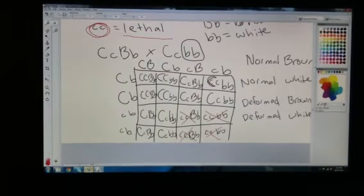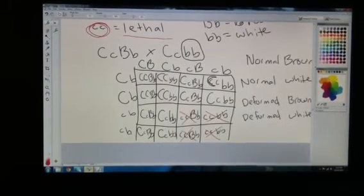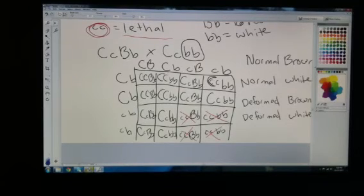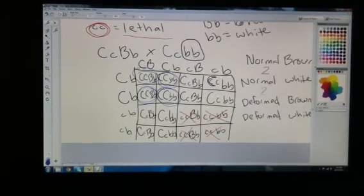Our job would be to count up how many offspring have normal legs with brown fur. First, I'm going to circle in blue all offspring that have normal legs. That's my homozygous dominant CC. Here I have four that have the homozygous dominant combination. Out of these four, two are brown and two are white furred.